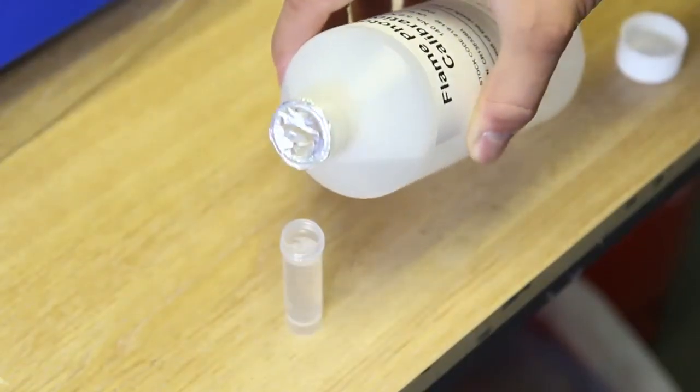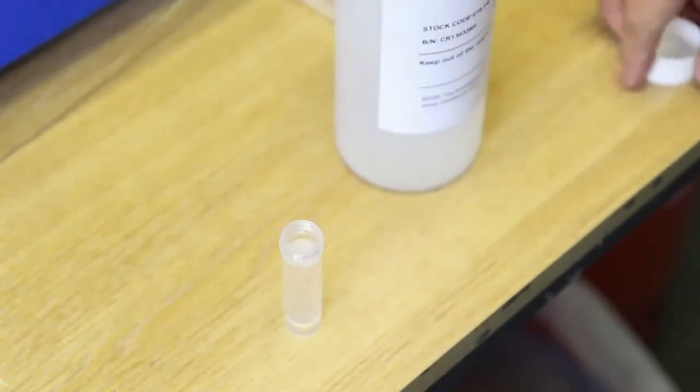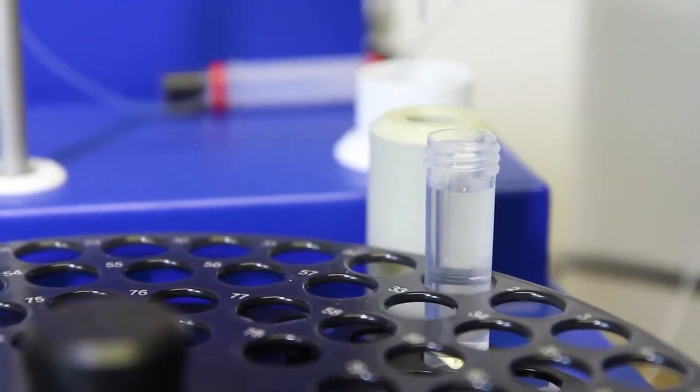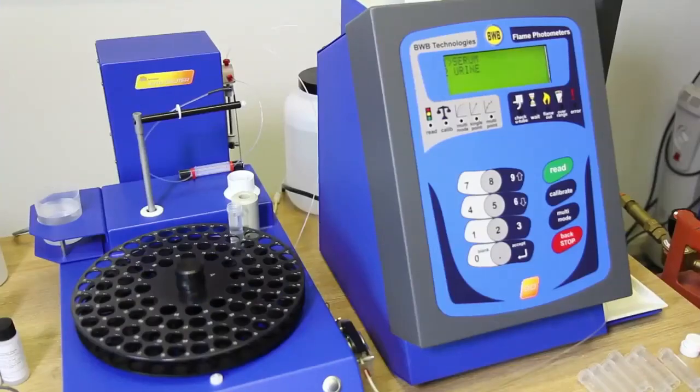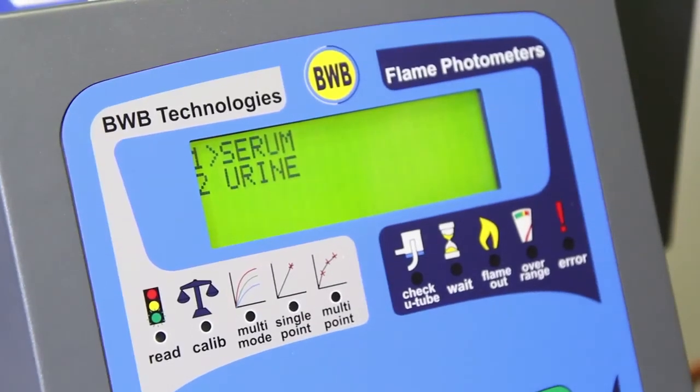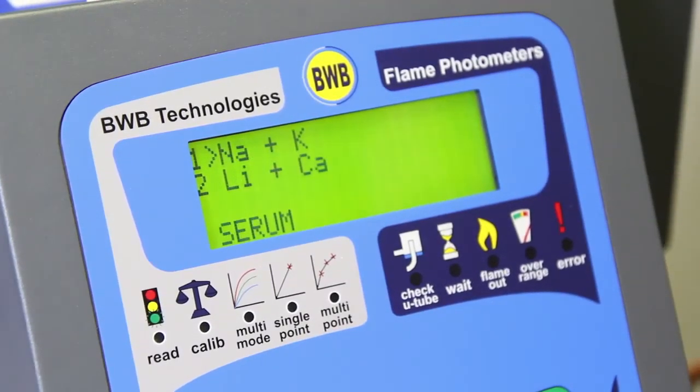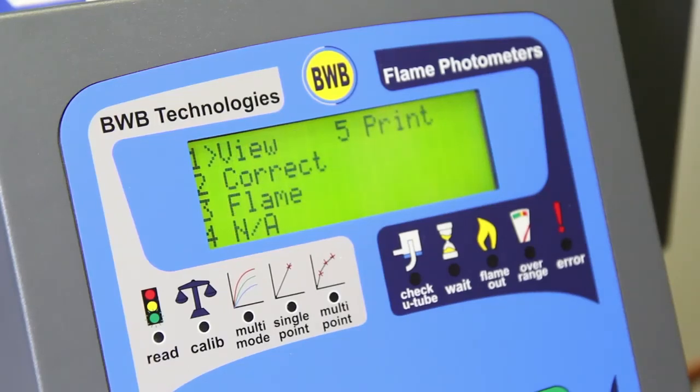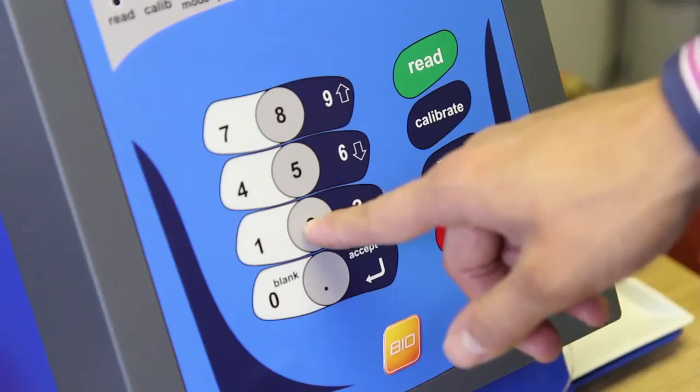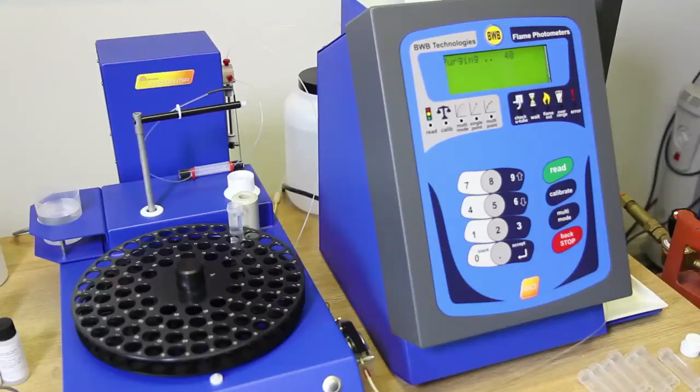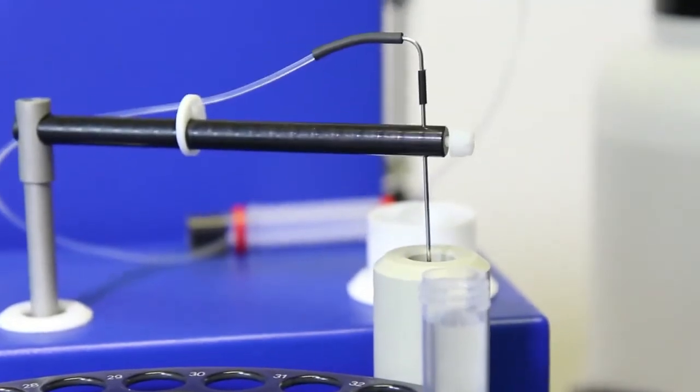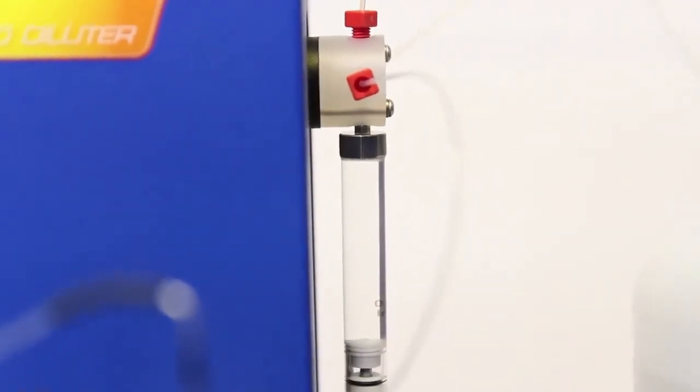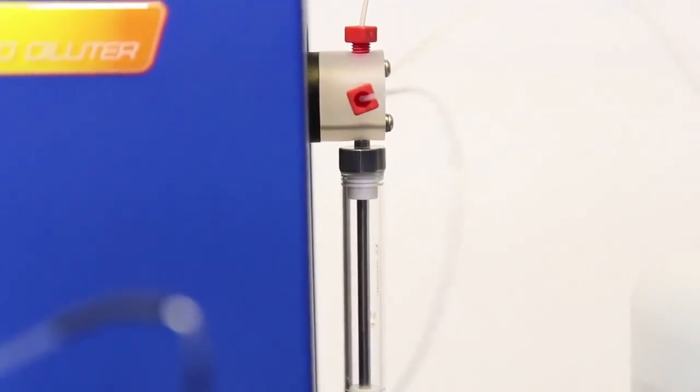First off, pour the calibration solution into a vial and place in the first position of the AFHS carousel. The AFHS will then proceed to take a reading and recalibrate the curve. The process only takes a couple of minutes and helps to ensure that your BWB Bio is running at peak accuracy.